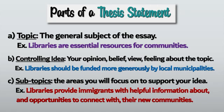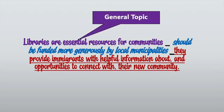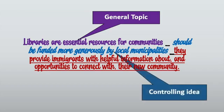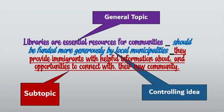For example: libraries provide immigrants with helpful information about and opportunities to connect with their new communities. So here we have the three parts of the thesis statement. The first is the general topic: libraries are essential resources for communities. The second is the controlling idea: should be funded more generously by local municipalities. And the third is a subtopic: they provide immigrants with helpful information about and opportunities to connect with their new community.